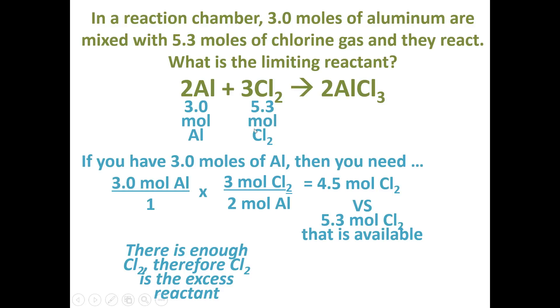which tells us the other reactant, aluminum, must be the limiting reactant. And the limiting reactant tells us the aluminum is going to run out. We're going to run out of the 3 moles of aluminum before we run out of the chlorine as we are making aluminum chloride.